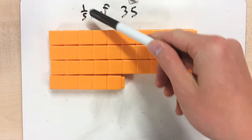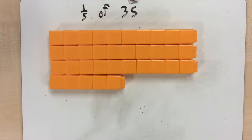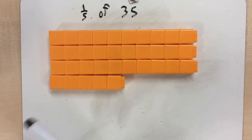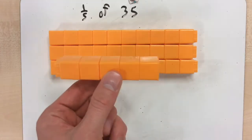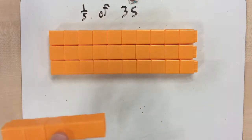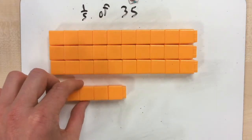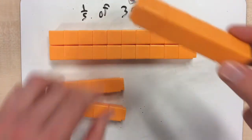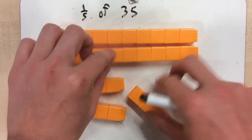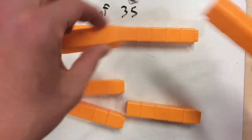To figure out what 1/5 of 35 is, we can take our 35 cubes here and put them into five different groups. We could share them out equally one at a time. However, I'm going to show you a quicker way. Instead of sharing into five groups, every time I take five away, that puts one in each group. So I'm going to take 35, take away 5 — that's one 5, take away a second 5, a third 5, a fourth and fifth 5.